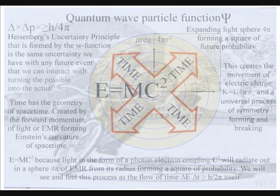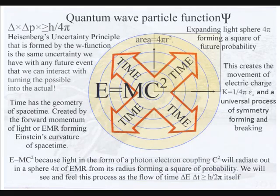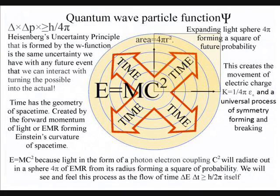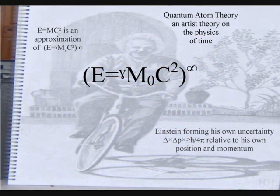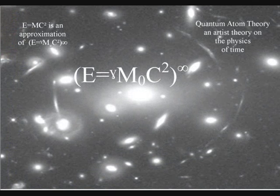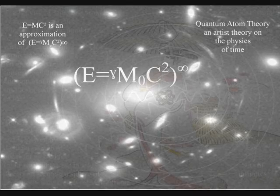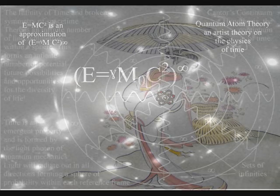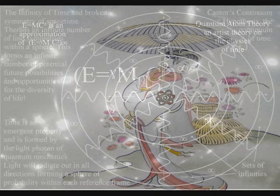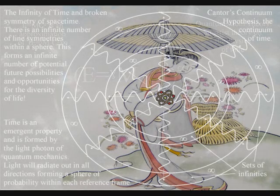The C² in the equation represents light radiating out in all directions at a constant speed, forming a sphere of electromagnetic radiation from its radius, forming a square of probability. This is the same probability we have with any future event, because the process forms the flow of time itself, photon by photon. The brackets represent the boundary condition of the reference frame formed by the energy, and the infinity symbol represents an infinite number of reference frames that make up our universe. In this way we link the time dilation of Einstein's theories on relativity with a deeper understanding of quantum mechanics, to give us an objective understanding of our universe that fits in with the reality of our everyday life.